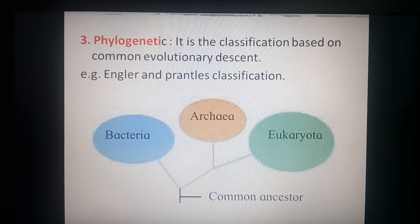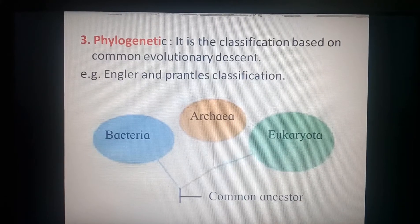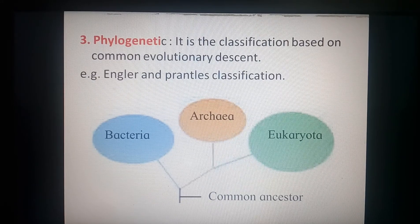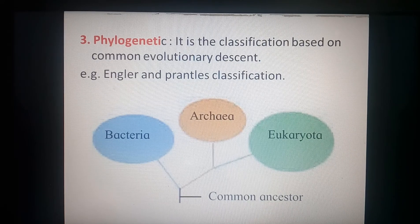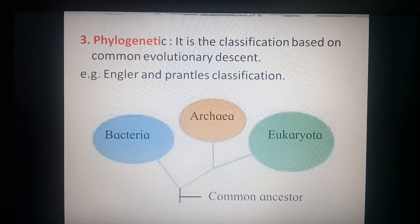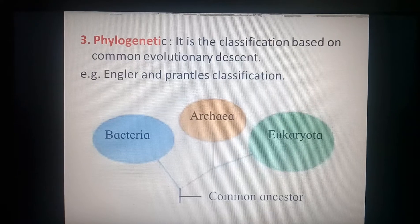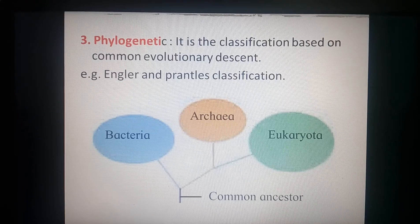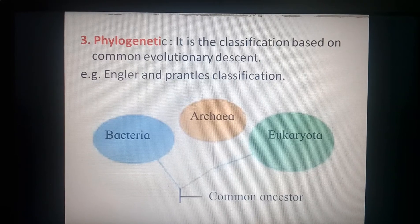These are the three different forms of classification: artificial, natural, and phylogenetic. By using all those forms, one can classify organisms into their respective groups. Not just one system, but if all those systems are followed properly, it is easy for us to classify organisms into different groups. That's all for today's lecture, thank you.